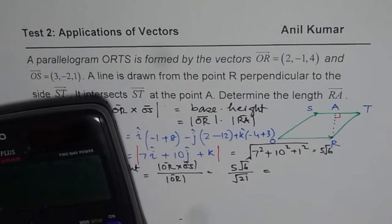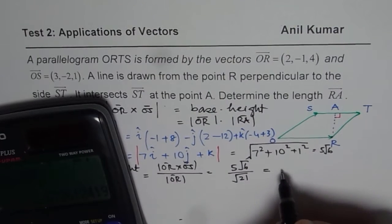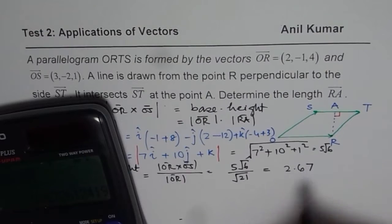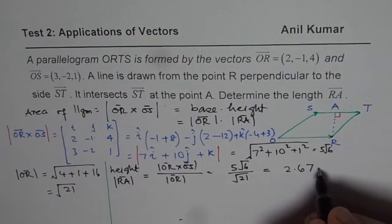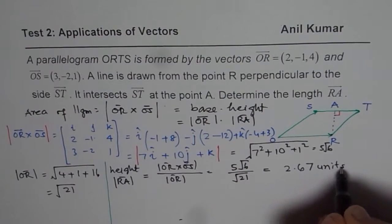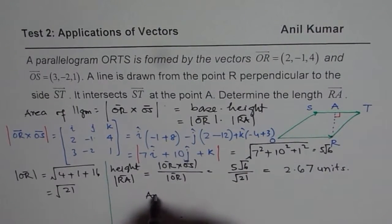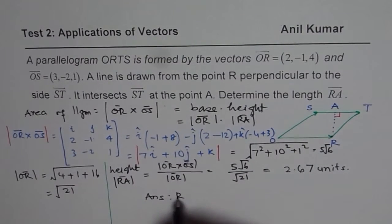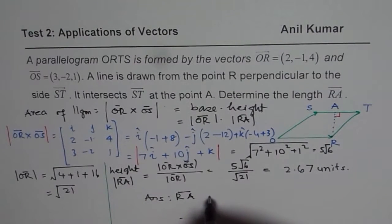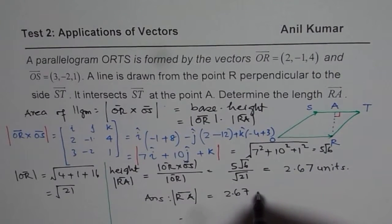So we do 5 square root 6 equals to, and we will divide this by square root of 21, and say equals to, in decimals, let us write down the answer, which is 2.67. So we get our solution as 2.67 units, whatever the units are. So the answer is that the length RA, RA, length is magnitude, is 2.67 units.